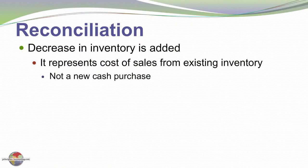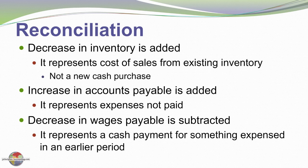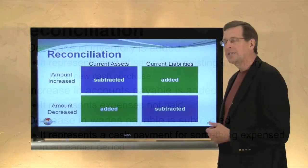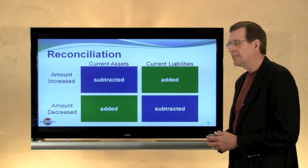Other adjustments: we have a decrease in inventory that's added — it represents cost of sales generated from existing inventories, not through the new purchase of additional inventory. Increases in accounts payable are added — these are essentially expenses that we're not paying yet. Decreases in wages payable are subtracted — these are essentially cash outflows to pay wages that were expensed or accrued in a previous accounting period. There are many other scenarios where we could have potential adjustments, adds, and subtracts.